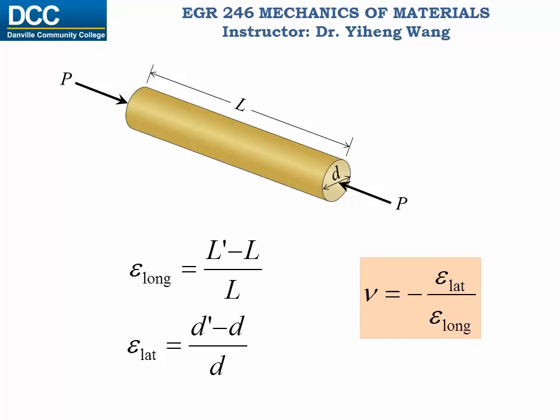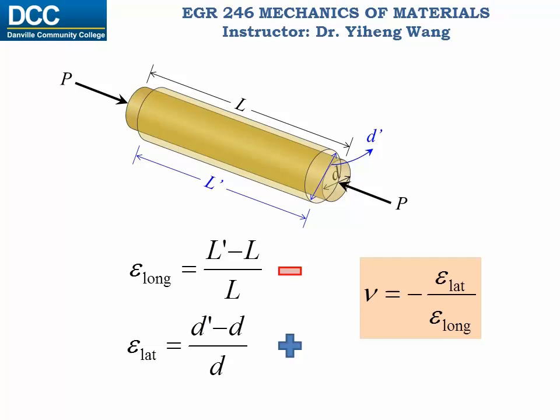Similarly, if this shaft is subjected to axial compressive forces instead, it will contract along the axial direction and expand along the radial direction. So in this case, epsilon longitudinal is negative and epsilon lateral is positive, therefore the Poisson's ratio is still positive.